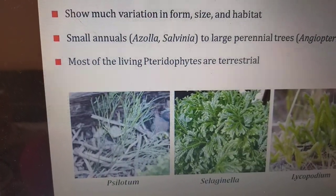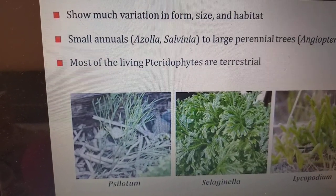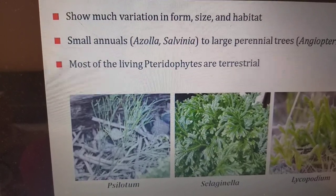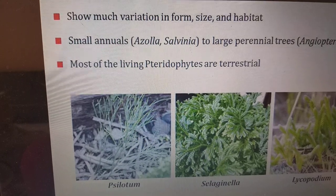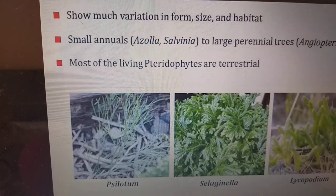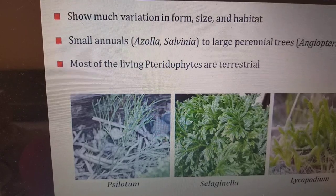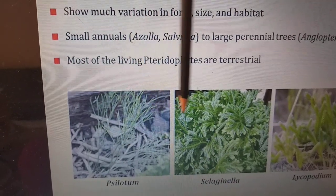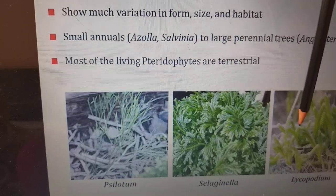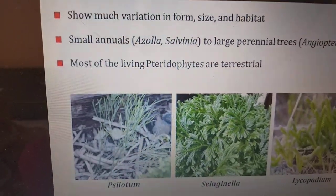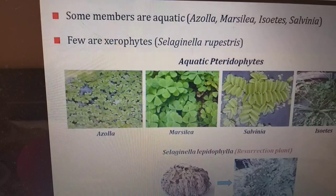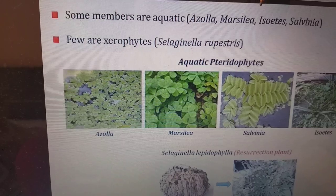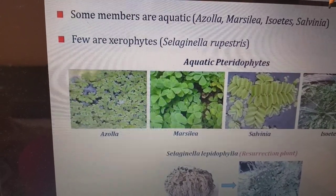There is much variation in form, size, and habitat. Some annuals are azolla and salvinia; large perennial trees include angiopteris. Most living pteridophytes are terrestrial — examples are ciliotum, selaginella, and lycopodium. Some members are aquatic: azolla, marsilia, isoetes, and salvinia.